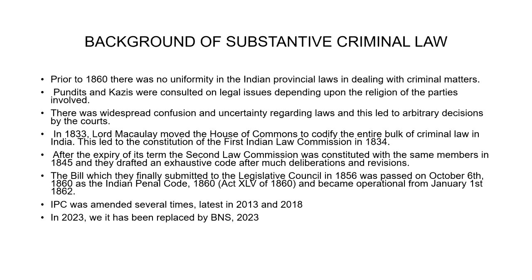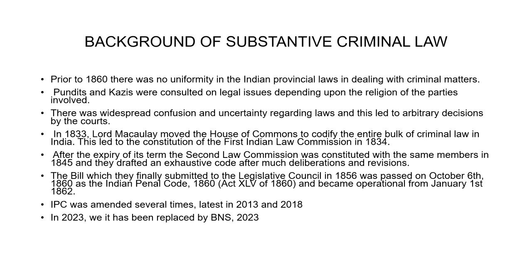What happened after we got the first Law Commission — it expired its term, then the second Law Commission was constituted with the same members. It was constituted in 1845 and they drafted an exhaustive code. There were a lot of deliberations involved. Once a draft was made it was revised and re-revised. So after multiple revisions, finally we got a bill which they submitted to the Legislative Council in 1856. This bill was passed on 6th October 1860 as the Indian Penal Code 1860, and it became operational from 1st January 1862.